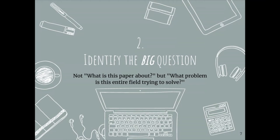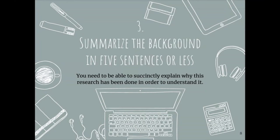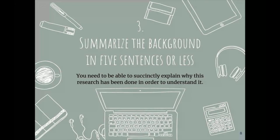Step three: once you've read the introduction and identified the big question, summarize the background in about five sentences or less. Consider what work has been done before in this field to answer that big question, and what the limitations of that prior work are. Did they have a large enough sample size? Did they observe subjects over a long enough time? You'll need to succinctly explain why this research has been done in order to understand it.